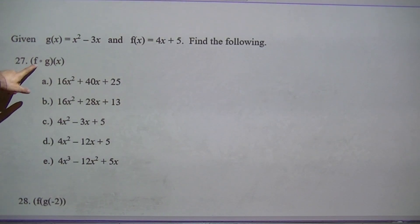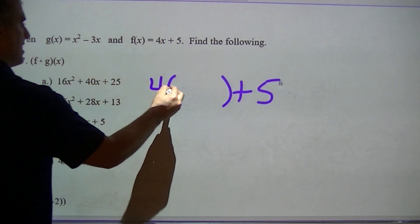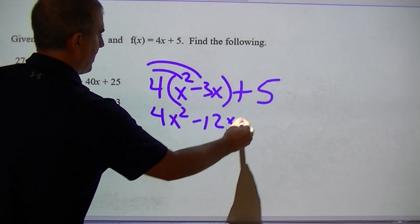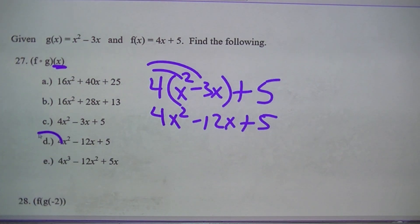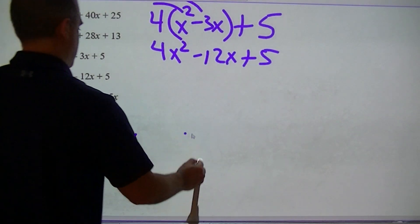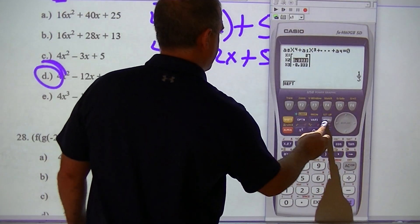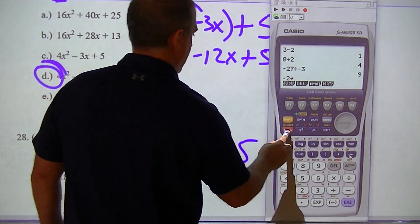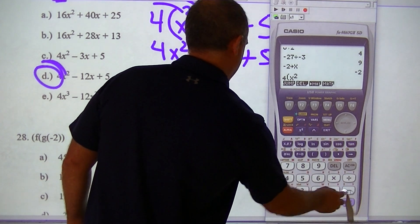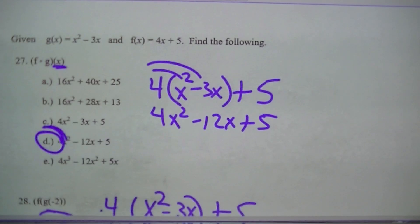Question 27 goes back to some composition. This would be the function I start with — I take out the x and put a blank, and that's what I fill in. Since I have this, I have to distribute: 4x squared minus 12x plus 5, and nothing can combine there, so my answer is D. When they have f of g of negative 2, it's very similar — I fill in the function, store negative 2 for x using Alpha-x, then type in the expression as I see it and get 45.